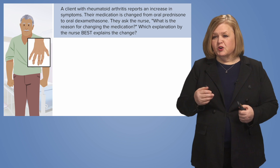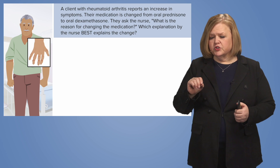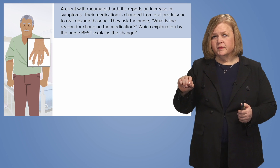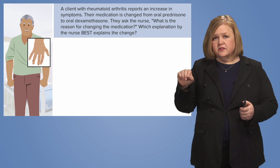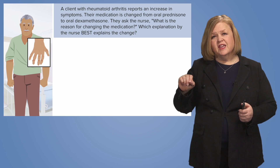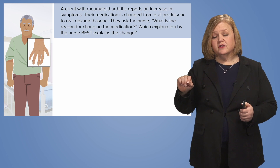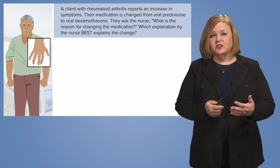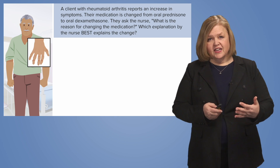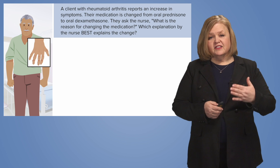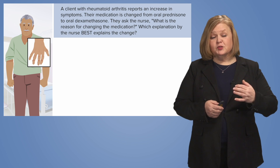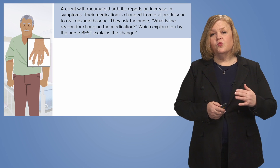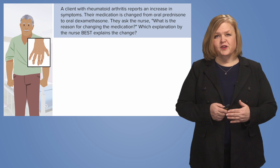Pause the video and do this on your notes. Write down RA and some quick symptoms. Write down oral prednisone and oral dexamethasone — see what you remember about those drugs before you look at the answer choices. Then restart the video, look at the answer choices, select the best answer by eliminating three others, and we'll walk through the question to the end.